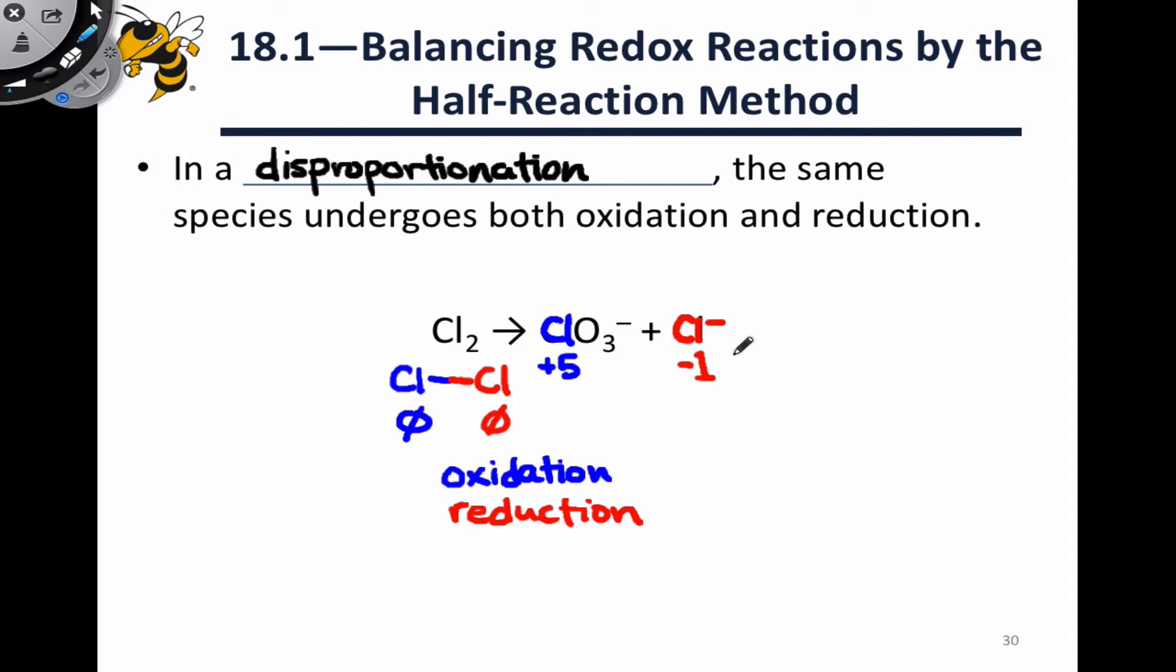And this term disproportionation comes up whenever equivalent atoms or groups within a molecule split apart and do different things in the course of a chemical reaction. So here, it's the two chlorine atoms undergoing two different processes, oxidation and reduction.